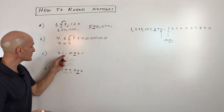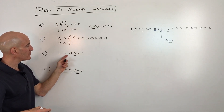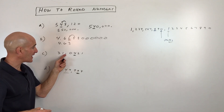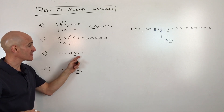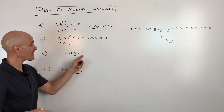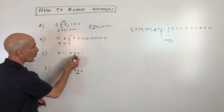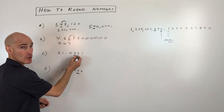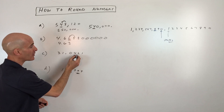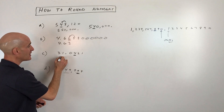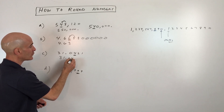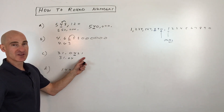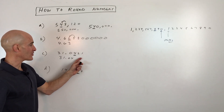Next: 31.0421, read as thirty-one and four hundred twenty-one ten-thousandths. We want to round to the hundredths place. Going one place to the right, we get a two — four or less — so we round down and keep the hundredths digit the same. The result is 31.04. The remaining zeros can be dropped since they don't affect the value.